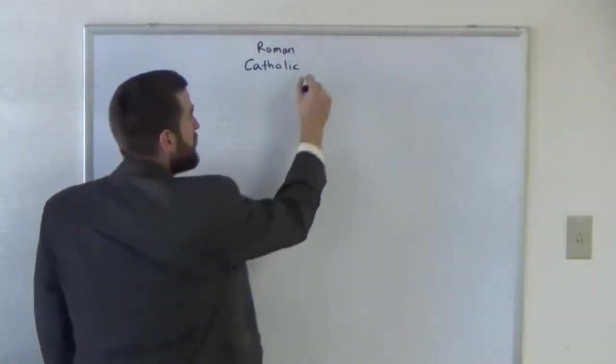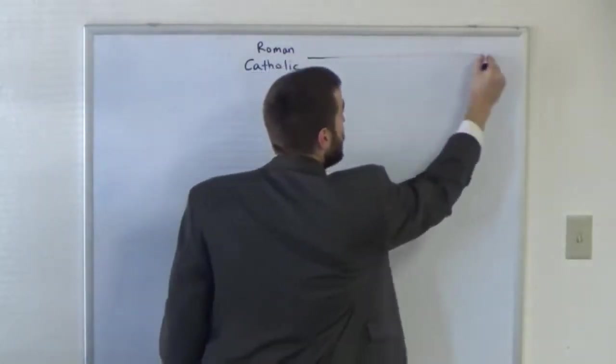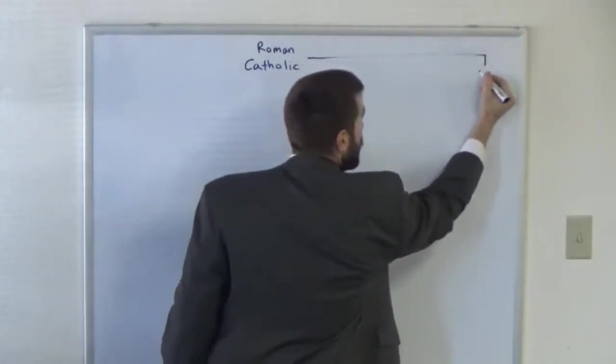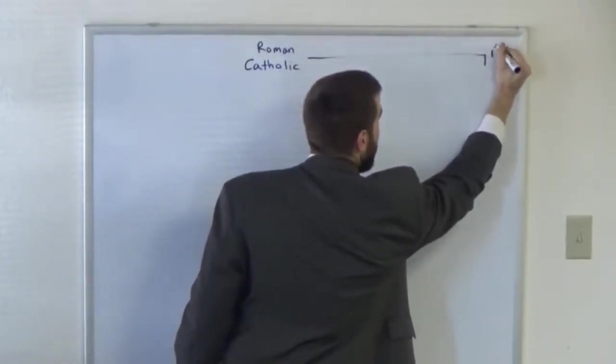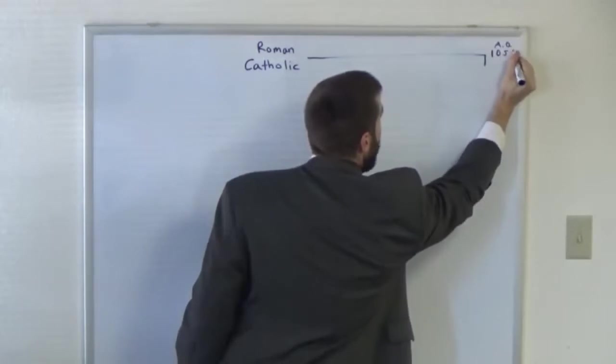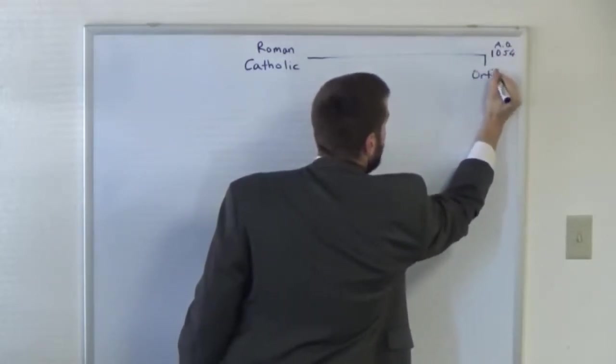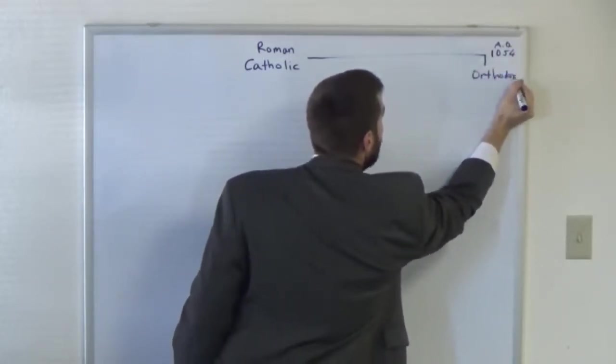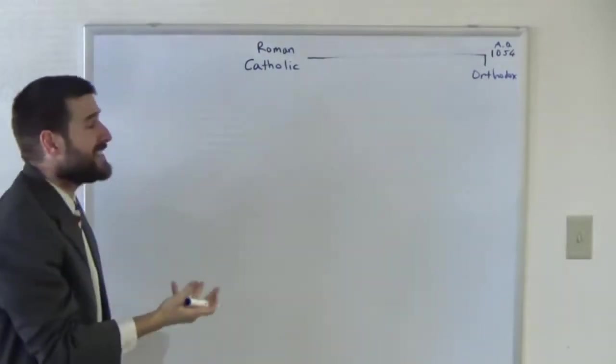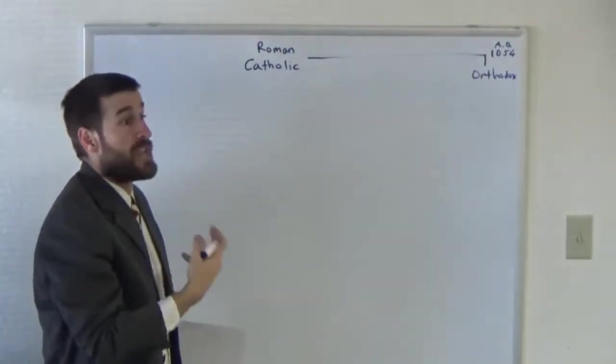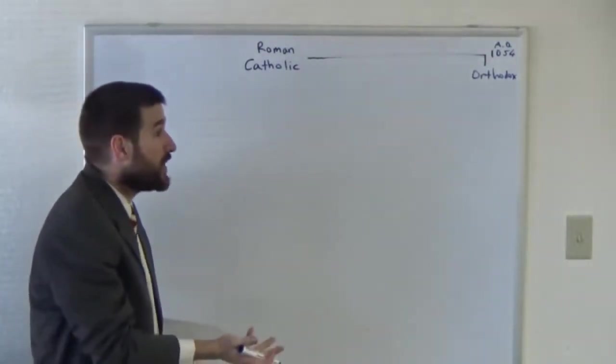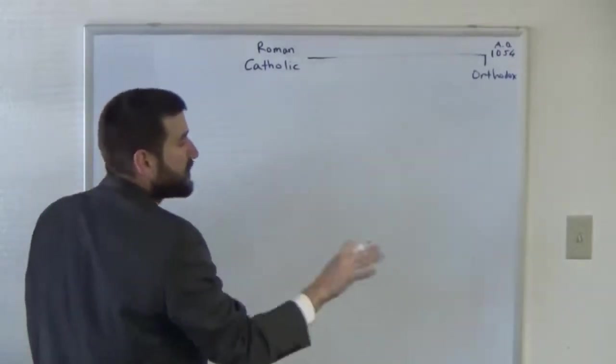Then in 1054 A.D., we have a split off from that, what's known as the Great Schism. This is where your Orthodox comes from. When we talk about Orthodox, sometimes known as East Orthodox, this could be Greek Orthodox, Russian Orthodox, any of that Eastern Orthodox religion.